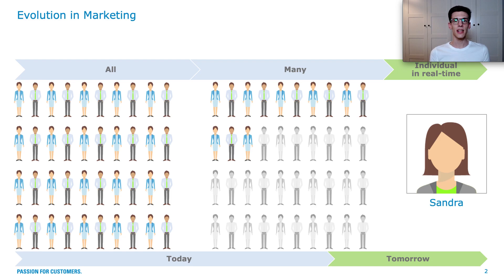Bringing that to another level is using intelligent segments. A lot of companies right now do segmentation within their customer base where they select based on demographics, maybe your favorite store or where you live. If you receive communication that is a little bit more tailored to your specific needs, you might be segmented by that marketing department. But you might also see parts of the newsletter that don't fit your individual situation, like a product being advertised that you just recently bought. That's the state where most companies are right now.